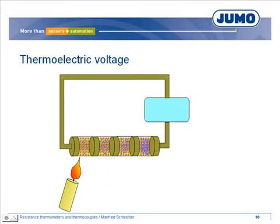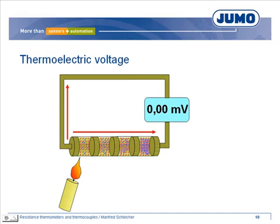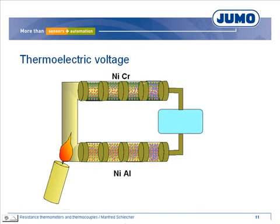By connecting the cold and the warm wire end to the device, you can try to measure the resulting voltage, but the measured voltage is zero millivolt. The reason is the same effect occurring at the measurement connection — due to the difference in temperature, the same voltage arises. Different materials produce a different potential shift, and the thermoelectric voltage depends basically on the conductivity of the material.